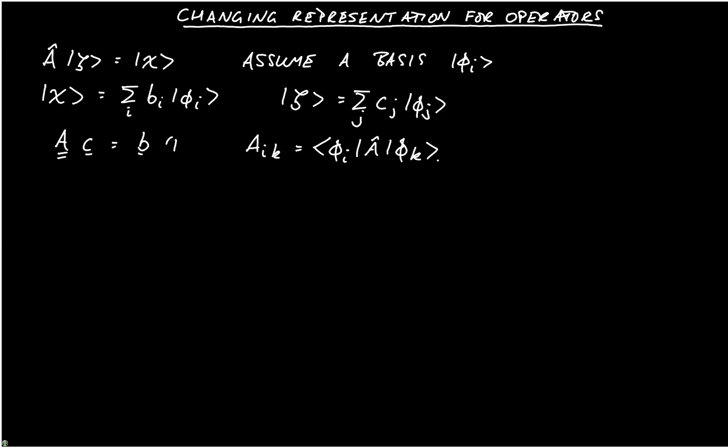And I'm going to label this matrix vector equation as equation 1. Now assume a different basis, so we want to change basis to, let's say, ket psi_A. So we will be able to write ket chi is the sum over A of B'_A psi_A, where B prime indicates that it's a different set of coefficients.